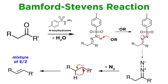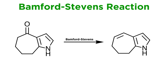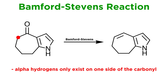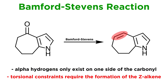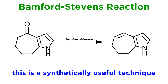For this reason, this reaction is useful only in a limited number of cases, but it can be employed with very particular cyclic substrates. In such cases, there are only alpha-hydrogens on one side of the carbonyl, and the cyclic nature of the compound produces torsional constraints that require the formation of exclusively Z alkenes. In such a case, the Bamford-Stevens reaction is synthetically useful. And with that, we've learned a few things we can do with carbenes.